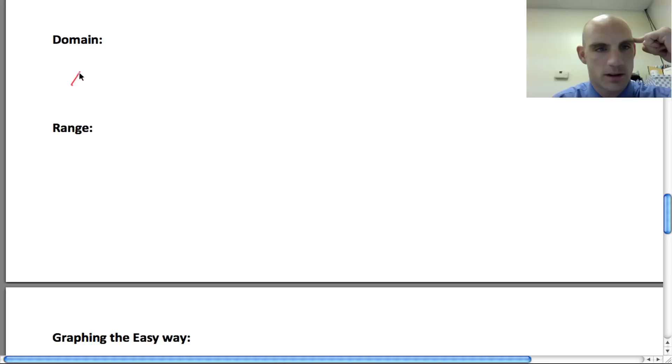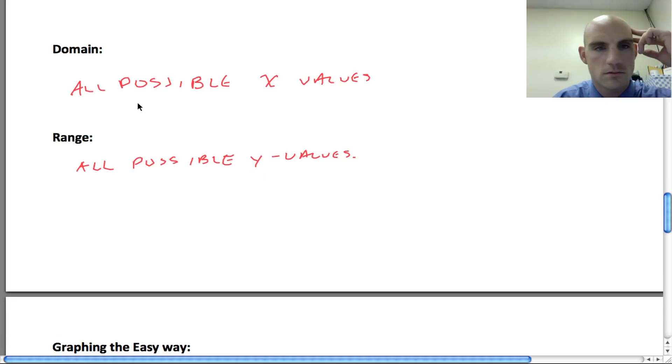Domain. We know this from algebra. All possible x values. And the range is all possible y values. That's domain and range. Pretty simple. For the sine graph, the domain is going to be anything. And the range is going to be -1 to 1 for sine.